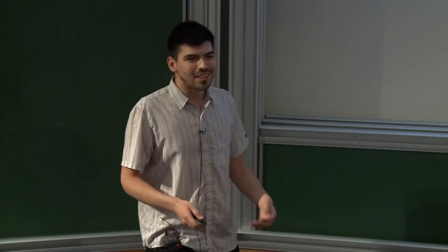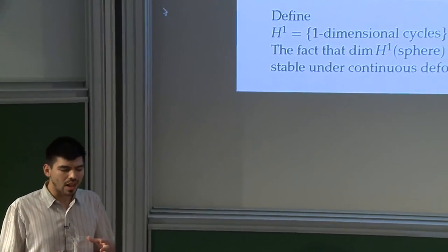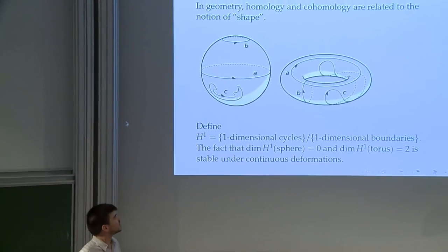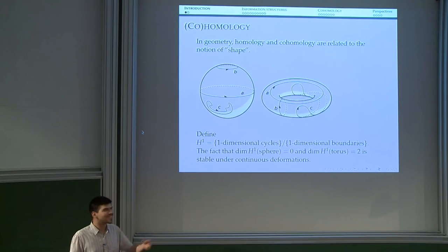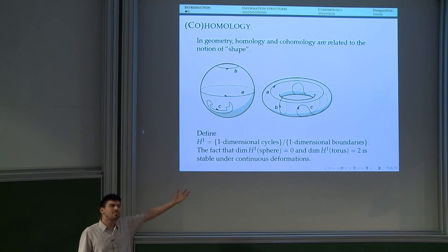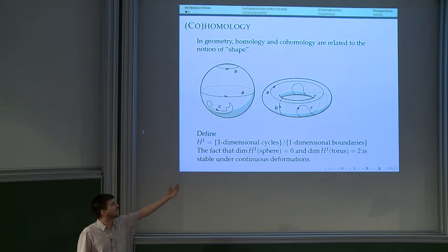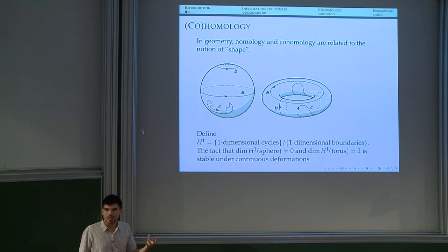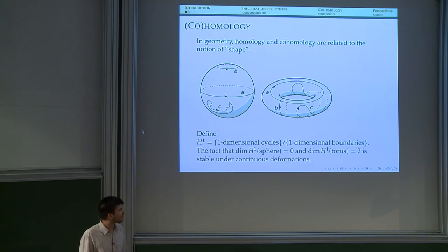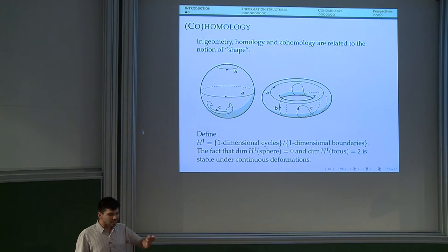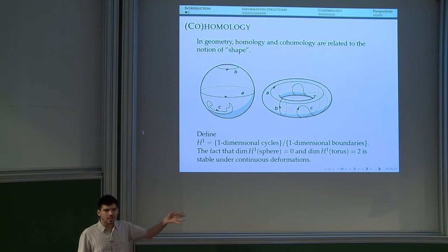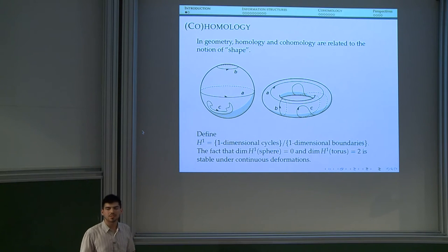In geometry we like this thing called cohomology because it allows us to distinguish the shape of things. You can distinguish a sphere from a torus because there is a hole inside, but there is a mathematical, logical way of saying that there is a hole there. Basically it is the fact that cycles A and B are not the boundary of anybody — they are cycles that are not boundaries, so they are non-trivial cycles. The notion of shape and geometry is related to cohomology theories that are stable under deformation. We can transform a sphere into an ellipsoid, but in terms of cohomology we have the same.